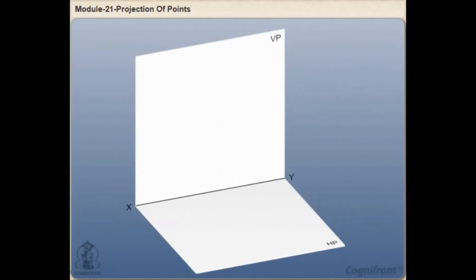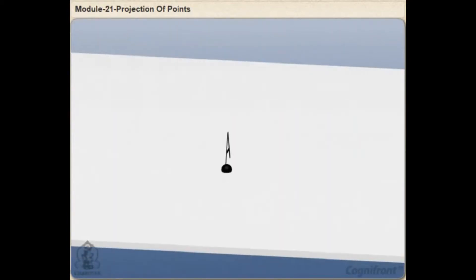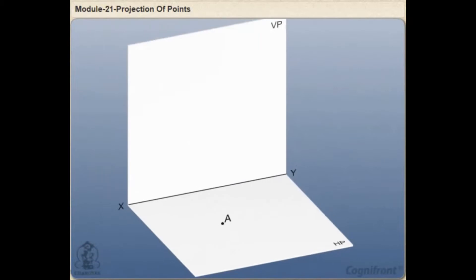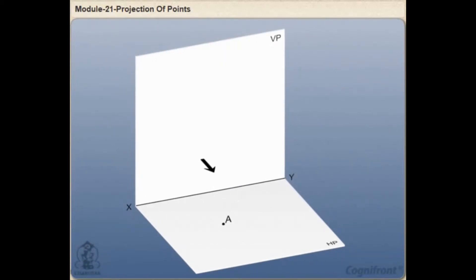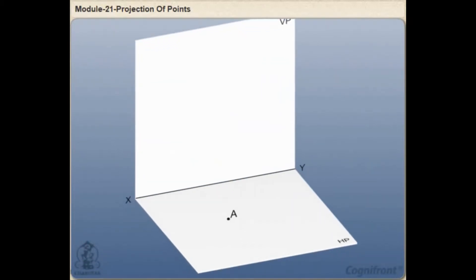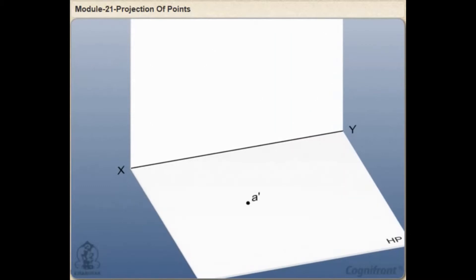Similarly, if a point say A is lying within the horizontal plane of projection in front of VP, observe its top view A dash and front view A.